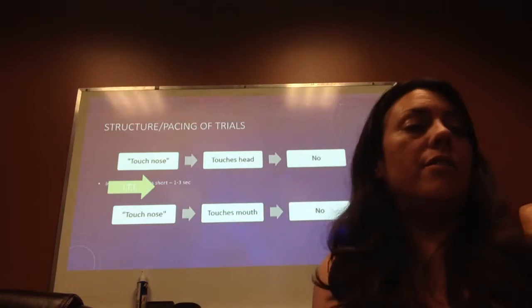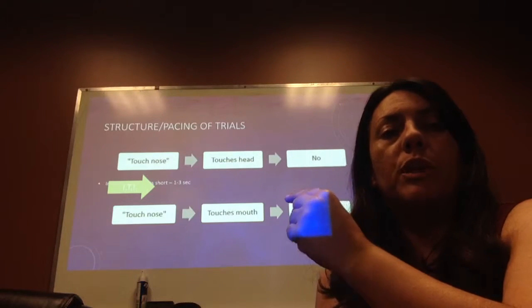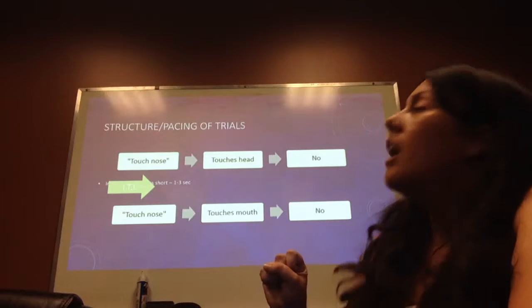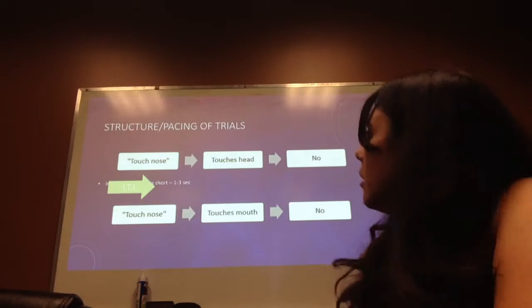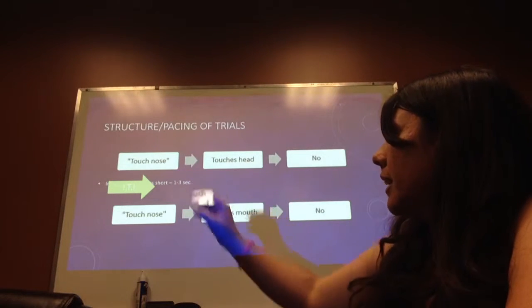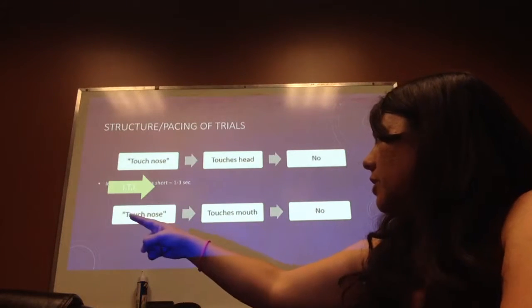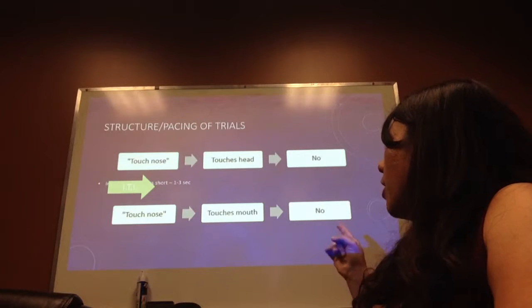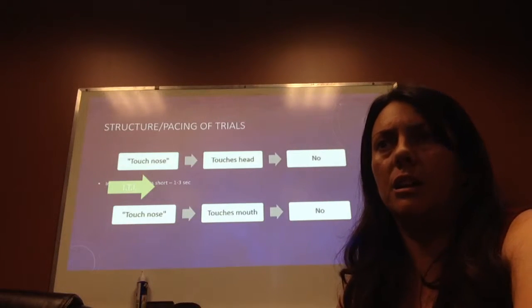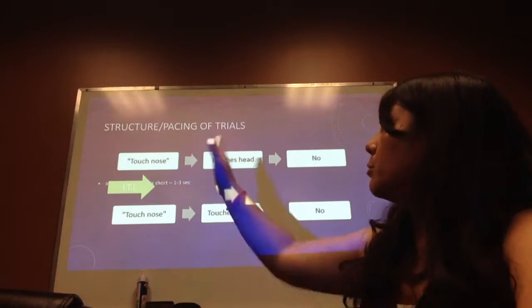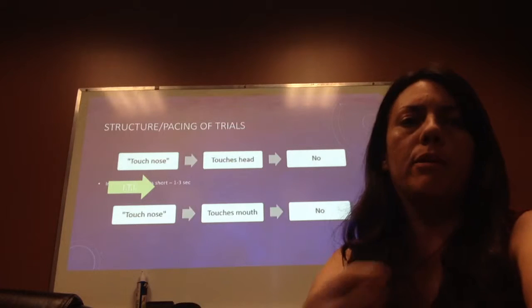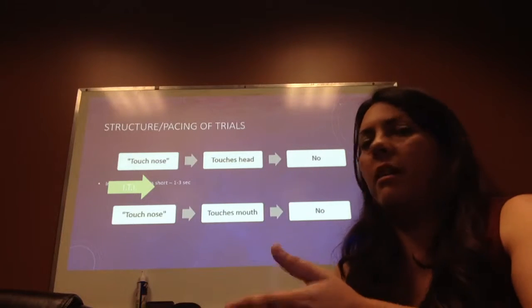In between trials is called the inter-trial interval, shown by that little green arrow. It's like: 'Touch nose' — response — ITI for one to three seconds — then present the next trial. When it's a 'no,' it's going to be a split second. If you're not delivering reinforcement, it's like 'no,' maybe take data, and move on.